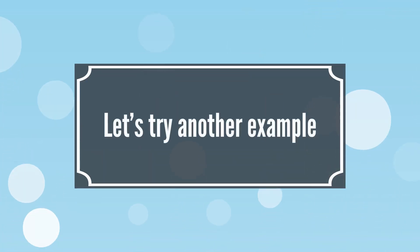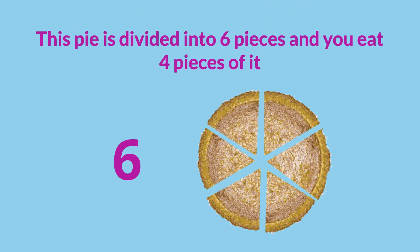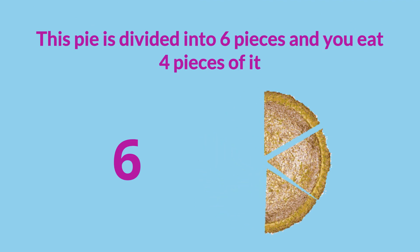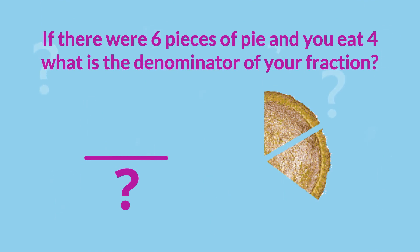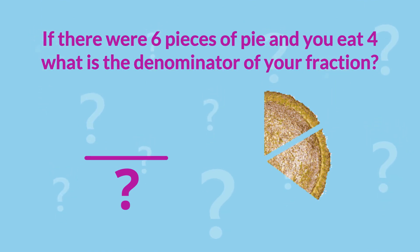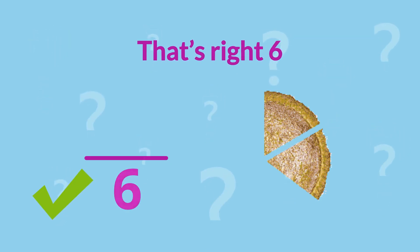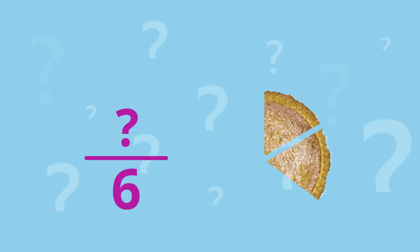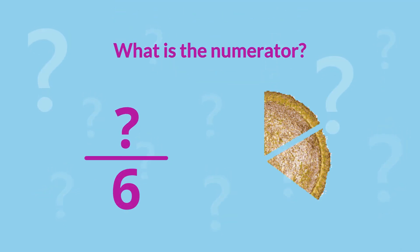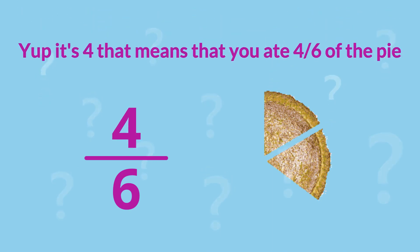Let's try another example. This pie is divided into 6 pieces and you eat 4 pieces of it. If there were 6 pieces of pie and you eat 4, what is the denominator of your fraction? That's right, 6. What is the numerator? Yep, it's 4.